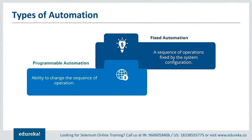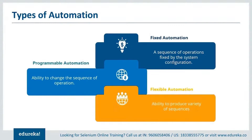Let's take a look at programmable automation. Programmable automation can be used to change the sequence of any operation based on the requirements specified by the user. It has made it to the front end of the user interface by providing various options to the user to edit the sequence as per their requirements. Flexible automation can inherit both fixed as well as programmable automation — it has the ability to produce a variety of sequences that are not just limited to one static type of automation.